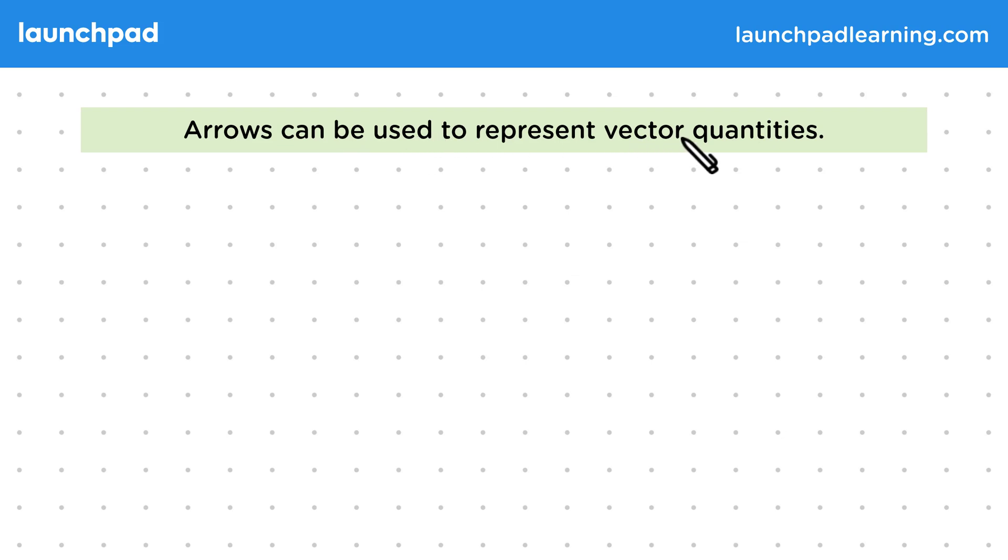Arrows can be used to represent vector quantities. Vectors are measurements with both direction and magnitude.